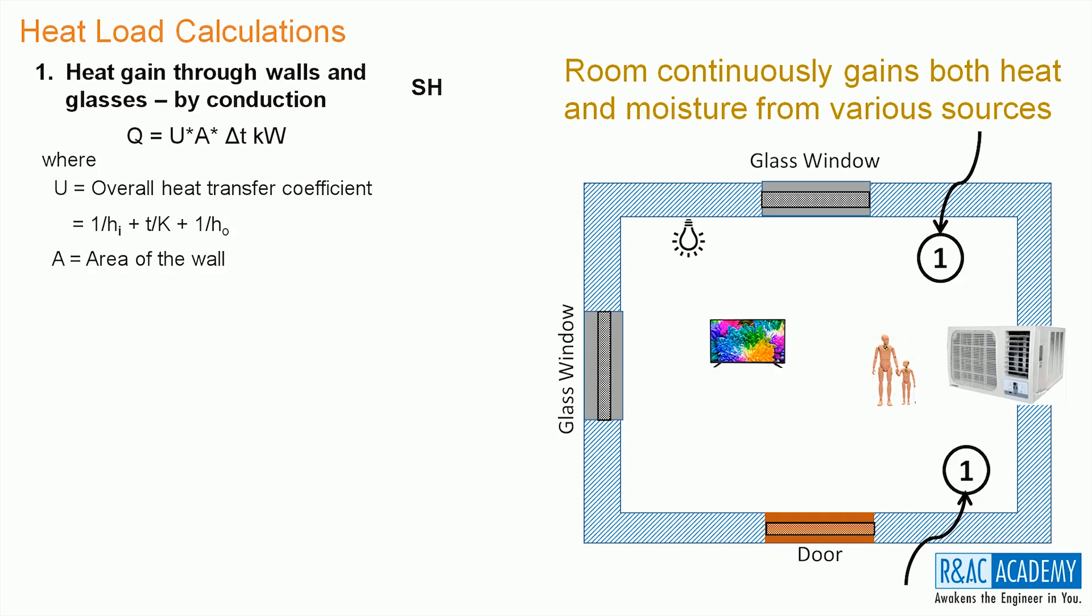A is the area of the wall which is obtained through the field survey. Delta T, equivalent temperature difference to be taken from the data tables.